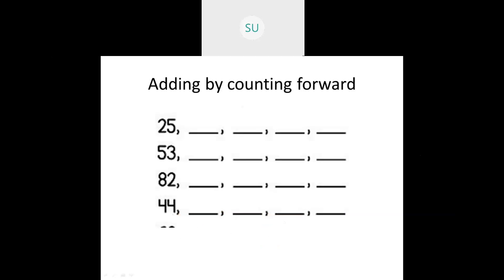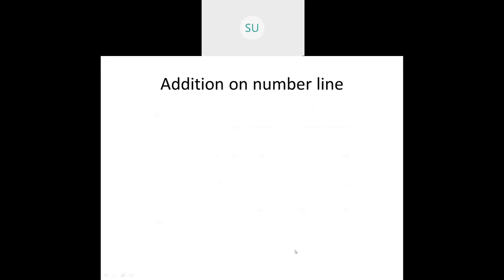Then we saw what is addition by counting forward. So you count forward after 25: 26, 27, 28, 29. This is how you do adding by counting forward.